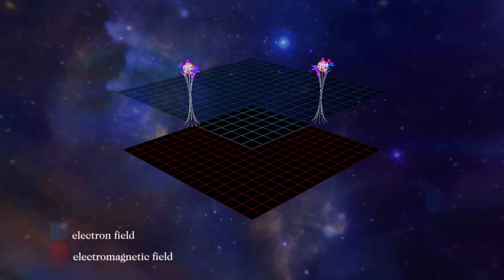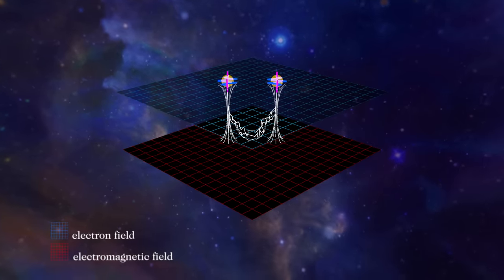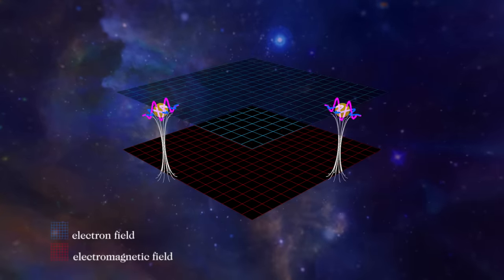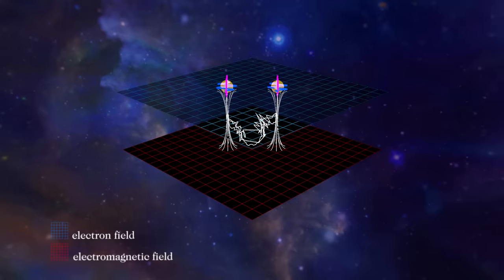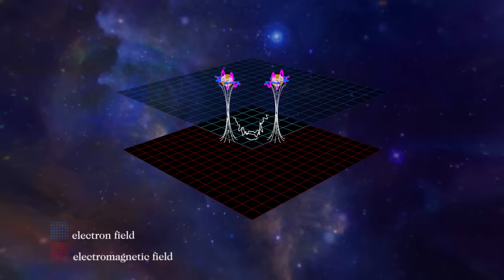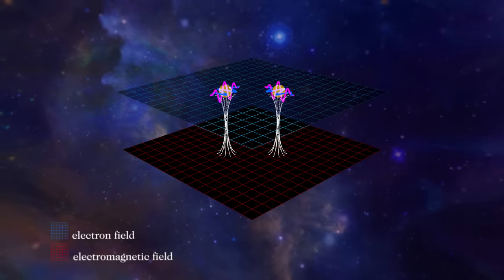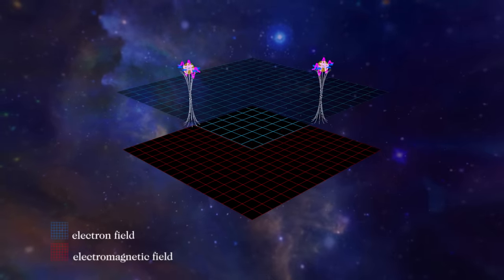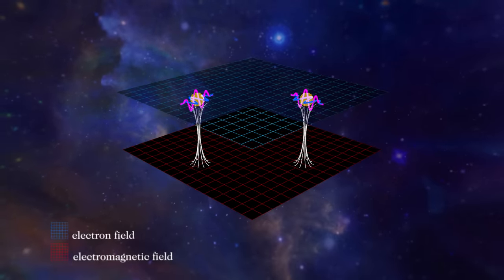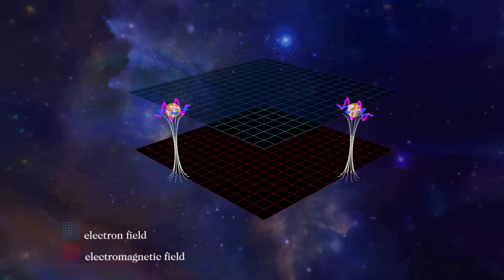For example, two electrons. Excitations in the electron field will repel each other by exchanging energy through the electromagnetic field. That process is kind of a mess. Each electron jiggles the electromagnetic field, and those jiggles have a back reaction that jiggles each electron, which in turn affects the way the electrons jiggle the EM field ad infinitum. It's a hopelessly tangled feedback cycle of reaction and back reaction, and it's impossible to calculate it perfectly.